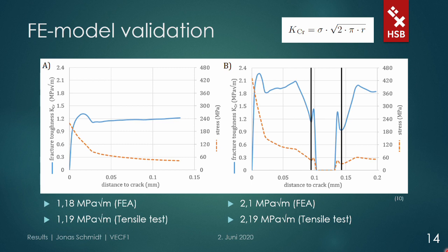Similar to the previous slide, we see on the left the results for the pre-crack which is about to propagate, and on the right the crack at the vein with a displacement that caused the vein to fail. The fracture toughness calculation is most accurate close to the crack tip, excluding the plastic zone — the first peak in toughness visible on the left. For the initial crack, the average fracture toughness behind the plastic zone is 1.18 MPa·√m, almost exactly the value calculated from the tensile test. On the right, we see the influence of the vein, indicated by the black line. The fracture toughness increases towards the vein, reaching about 2.1, which is quite close to the actual value of 2.19. With these exemplary results, we see our simplified model as a valid approach.